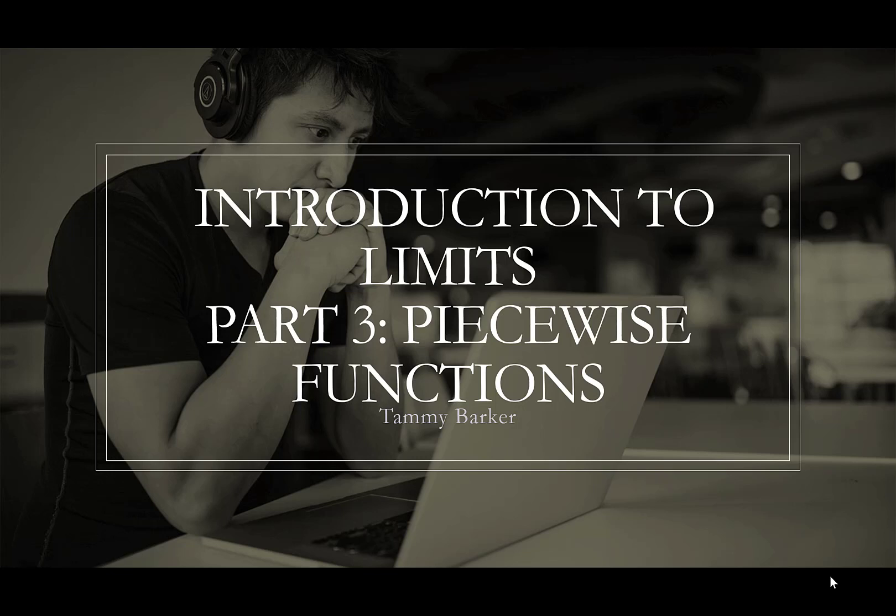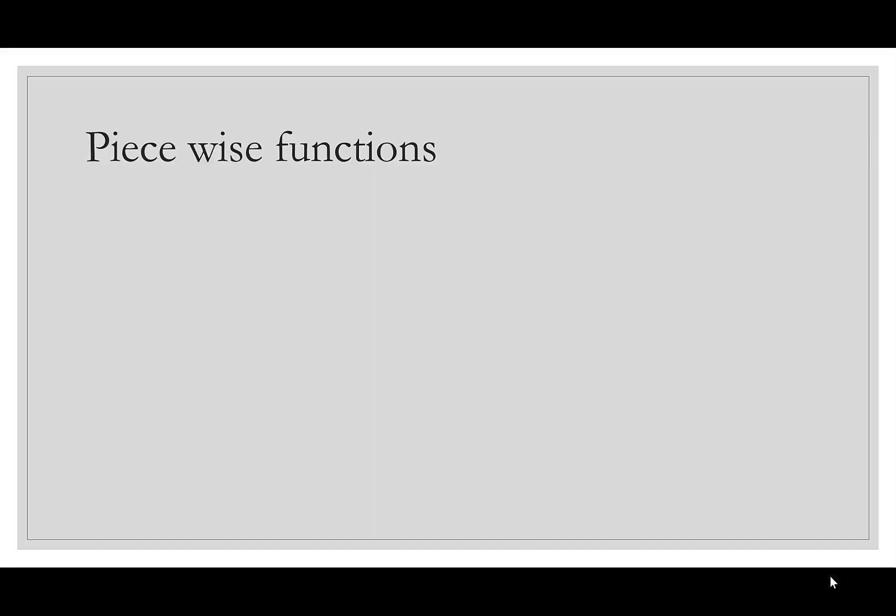Hi everyone! We're ready for part three of our introduction to limits, and this one will be on piecewise functions. We should start by talking about what a piecewise function is. Basically, a piecewise function is just a function that has multiple parts. For example, we could have f(x) = 3x when x is greater than zero, and f(x) = 2x if x is less than or equal to zero.